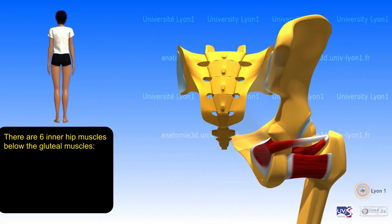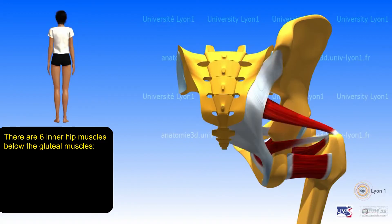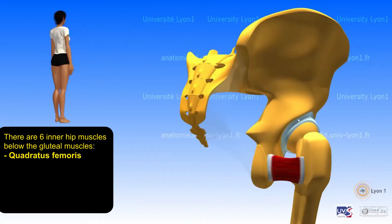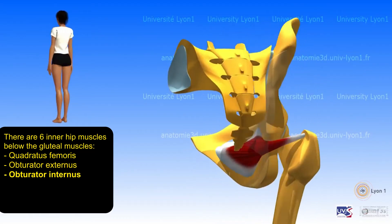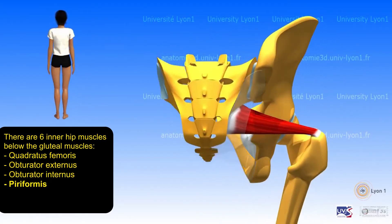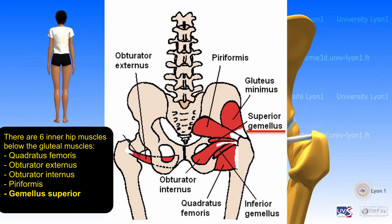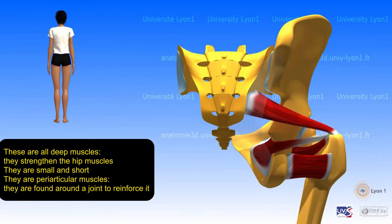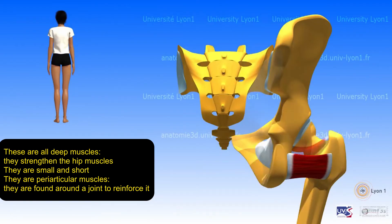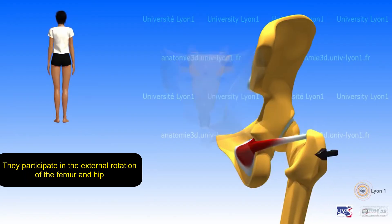Hip muscles. There are six inner hip muscles below the gluteal muscles: quadratus femoris, obturator externus, obturator internus, piriformis, gemellus superior, and gemellus inferior. These are all deep, small, and short periarticular muscles that strengthen and reinforce the hip joint. They participate in the external rotation of the femur and hip.